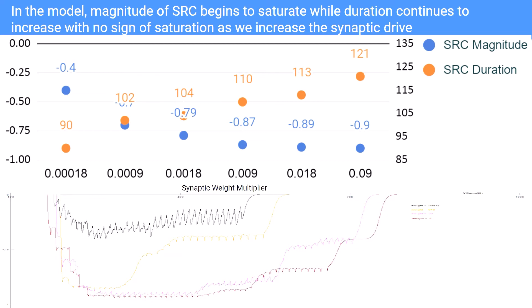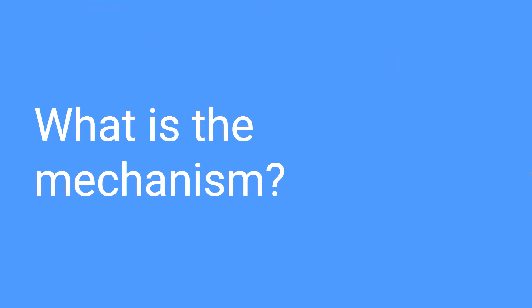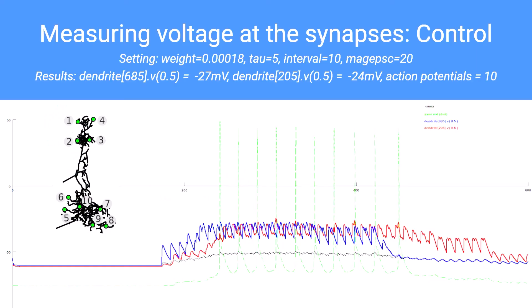Fortunately, the computer model allows us to further analyze what is happening in the neuron, which is not easily done when studying a live neuron — and this is why we are able to answer the questions raised by Dr. Baines and Dr. Landgraf's research. Here is a graph of the voltage at the synapse where the weight is 0.0018, which is the control default. The blue line represents location number one of the neuron, the red line represents location number five, giving readings of the upper and lower dendrite. The green line represents the number of action potentials in the neuron, in this case 10.